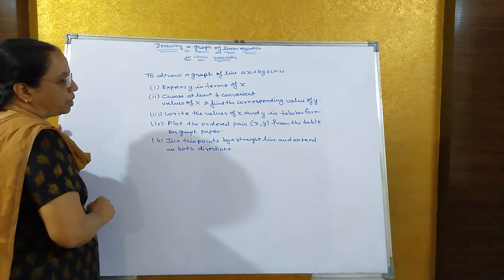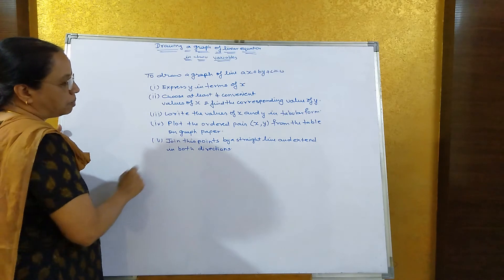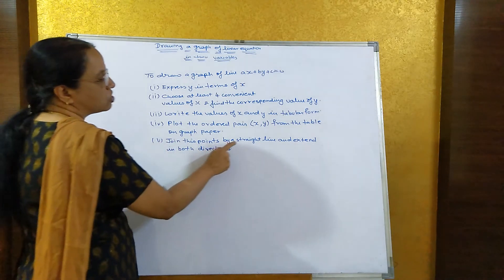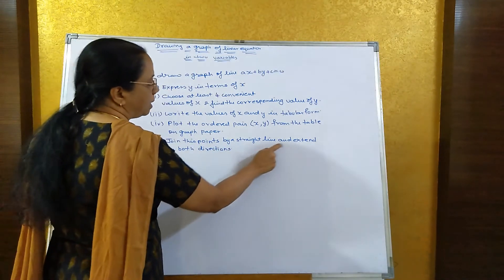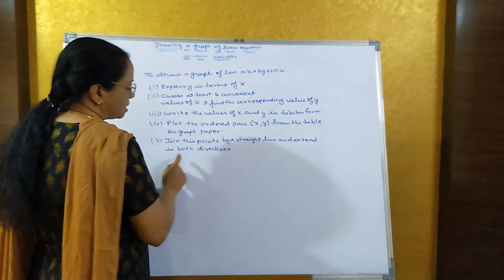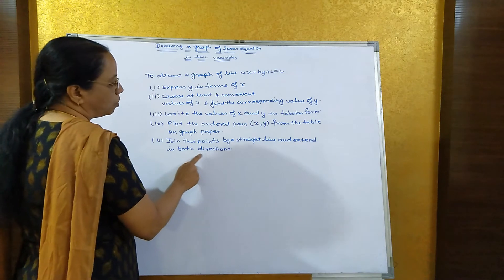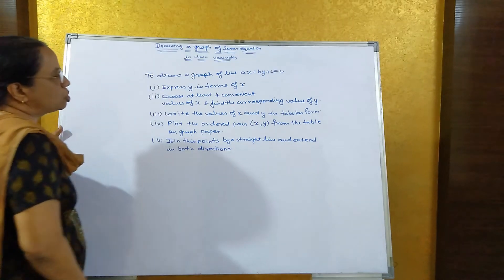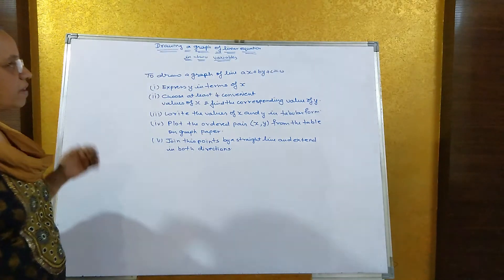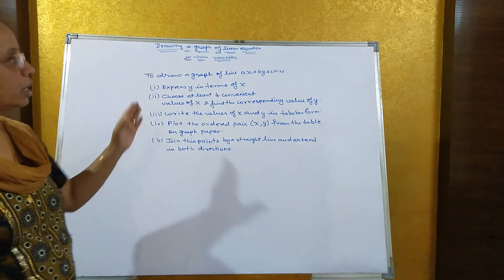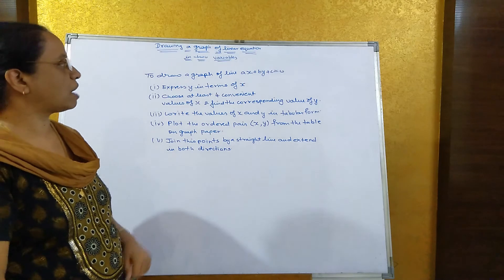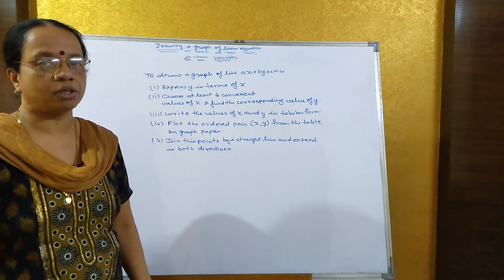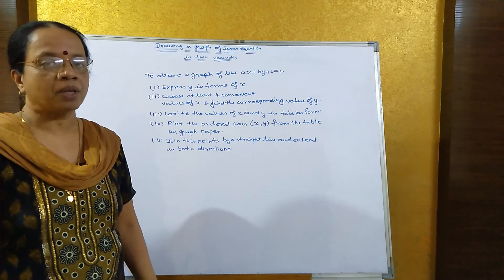After plotting the points on the graph paper, join these points by a straight line and extend it in both directions. This way you can draw a graph of the line ax plus by plus c equal to 0.